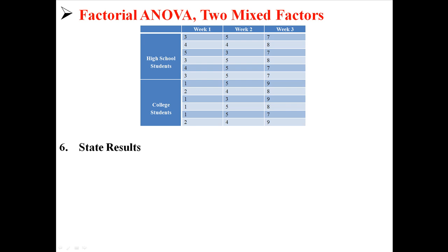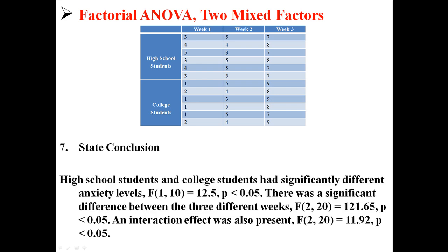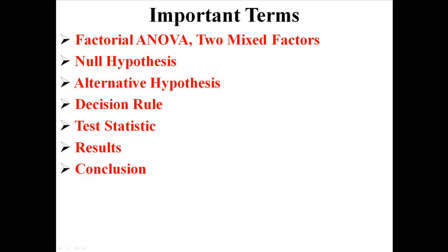Now we can state our results. For school, our F was 12.5, so we are able to reject the null. For week, our F was 121.65, so again we can reject the null. And for the interaction, our F was 11.92 — that's greater than 3.49 — so we can also reject the null. We reject the null in all three hypotheses. That means high school students and college students had significantly different anxiety levels, there was also a significant difference between the three different weeks, and an interaction effect was also present. That is the factorial ANOVA with two mixed factors.